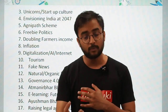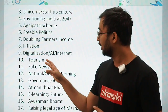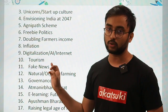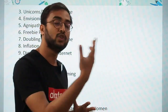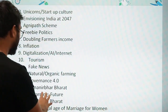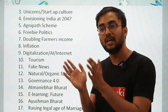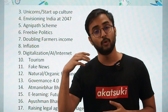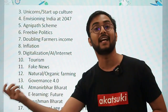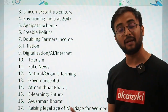Tourism is another theme — in RBI, an essay on medical tourism came. So you can expect agricultural tourism, medical tourism, or any form of tourism. Fake news is a menace today, and with media being the third pillar of democracy, this can be expected. Natural and organic farming is the future of agriculture. Government governance 4.0 — governance topics including governmental schemes for agricultural insurance or removing farmers from the debt cycle may also be asked.